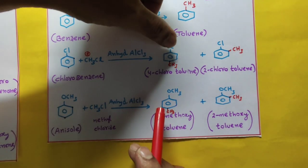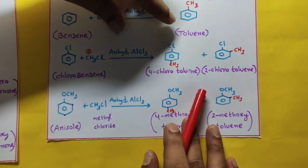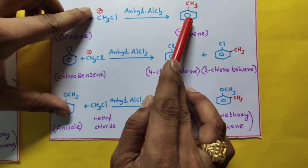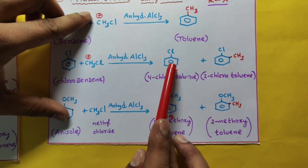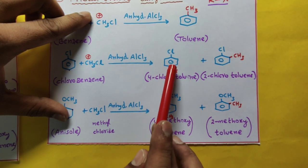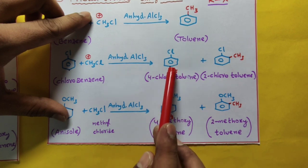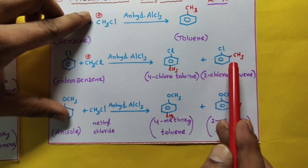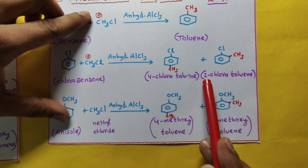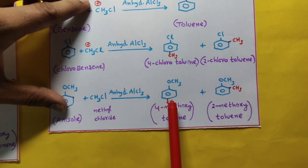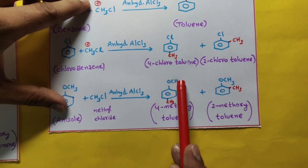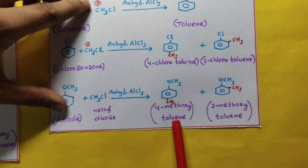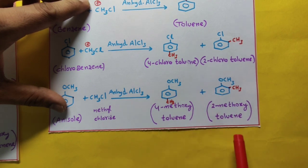Now let us see the names. If chlorine is not there, benzene with CH3 is called toluene. But chlorine is present at the 4th position — 1,2,3,4 — so it is 4-chlorotoluene. The ortho product has chlorine at the 2nd position: 2-chlorotoluene. Same for anisole: OCH3 is at the para position — 1,2,3,4 — giving 4-methoxytoluene. And the ortho product, 1,2, gives 2-methoxytoluene.